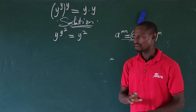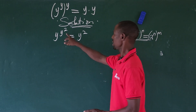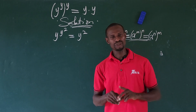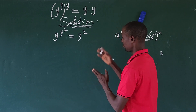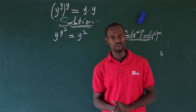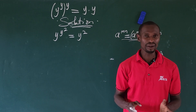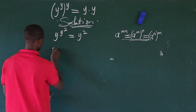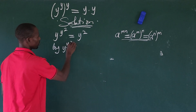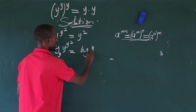At this point, the base numbers — or rather the base alphabet — are the same, so we could equate the exponents. But here we want to bring in another method: taking log of both sides of the equation. We are going to take log to base y, giving us log base y of (y^y)^2 equals log base y of y squared.